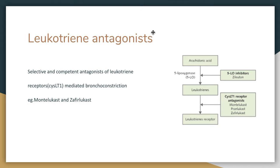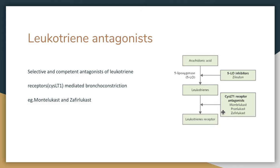Coming to leukotriene antagonists. Arachidonic acid is converted into its metabolites such as prostaglandins and leukotrienes through the action of cyclooxygenase and lipoxygenase, which mediate their inflammatory effects. Leukotrienes such as C4, D4, and E4 act on leukotriene receptors — CysLT1 receptors — which cause bronchospasm, increase in bronchial secretions, and mucosal plugging. Therefore, leukotriene antagonists selectively and competitively antagonize leukotrienes, blocking their effects on leukotriene receptors. Examples are montelukast and zafirlukast.